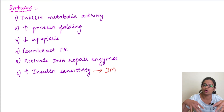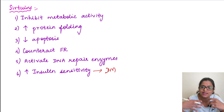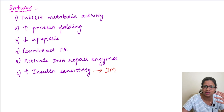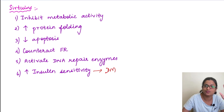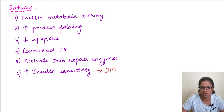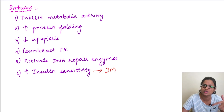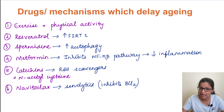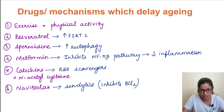We all have seen that sages and saints don't take food and they do penance for a very long time. Without food, how do they survive and have very long lives? It's because in their bodies the sirtuins activity will be increased. So now we have seen the mechanisms which cause cellular aging.